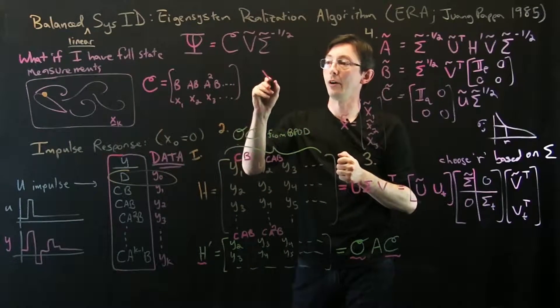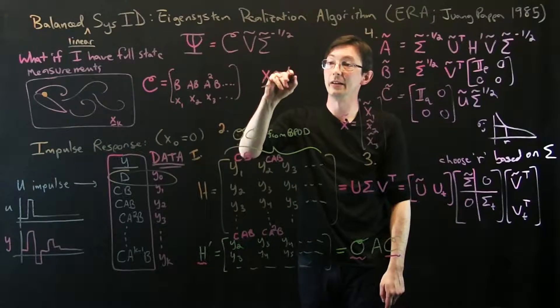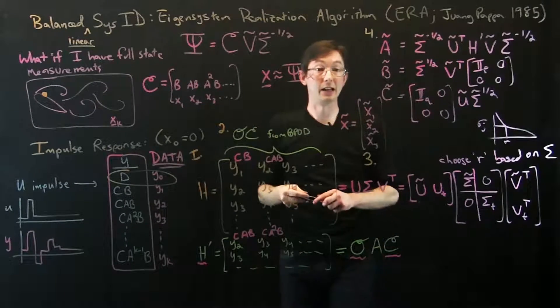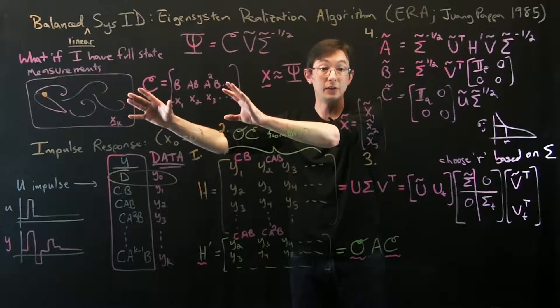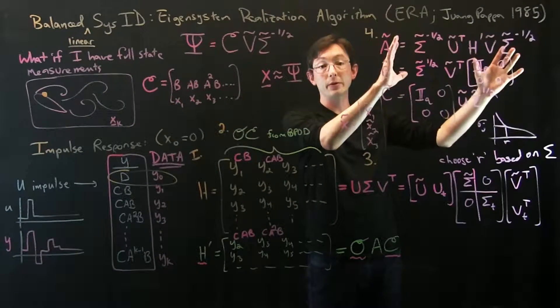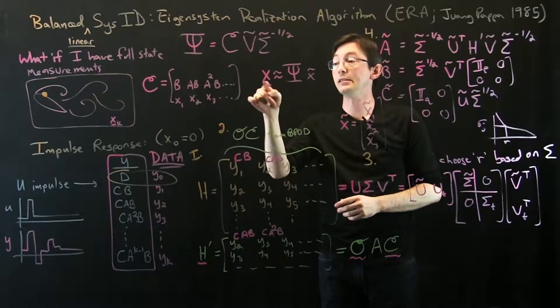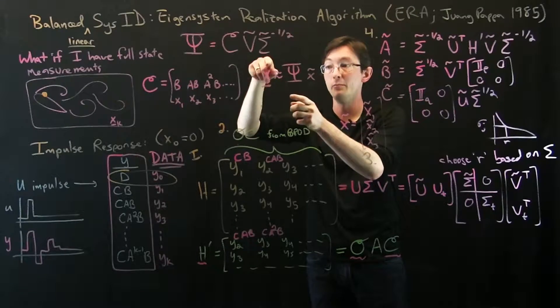In fact, I can approximate the full high dimensional X is approximately psi times my reduced state. So this allows me to, if I have access to full data in training, build a reduced order model and interpret what that reduced state means in terms of the big full state. In this case of fluid I get a full movie of my reduced order model.